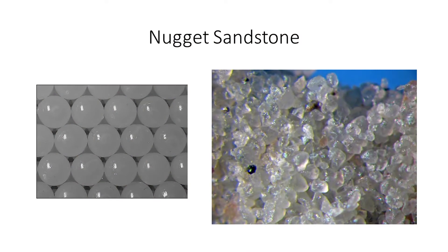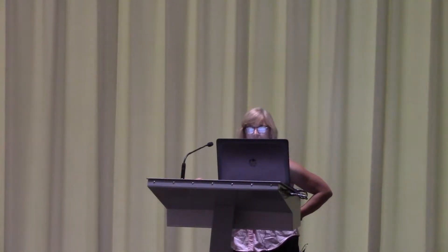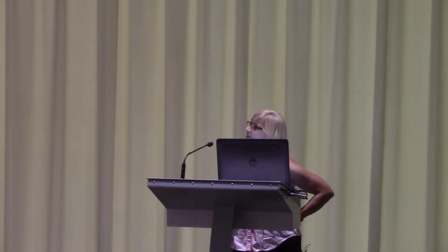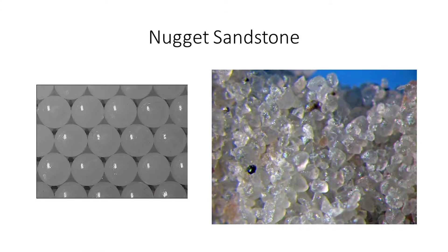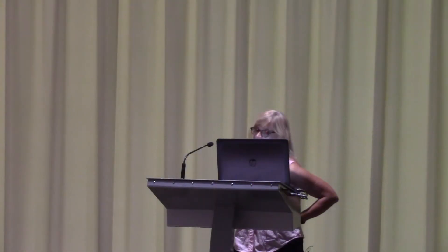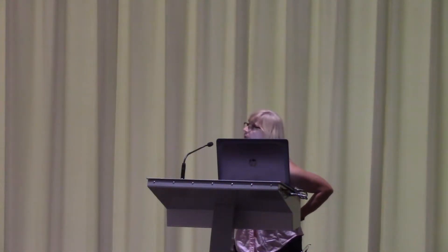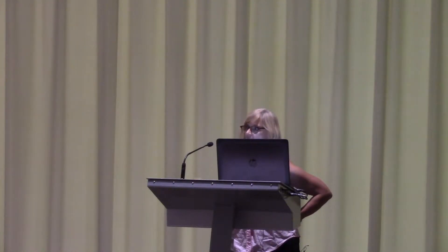This is a picture of nugget sandstone. It's commonly known as a so-called clean sandstone, but if you look at this picture, I can see some glaring differences. The size and shapes of the grains are not uniform. Therefore, the size and shapes of the pores and pore throats will not be uniform. So already we have a conflict with our model.